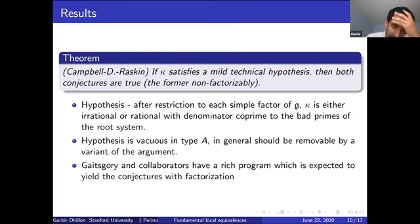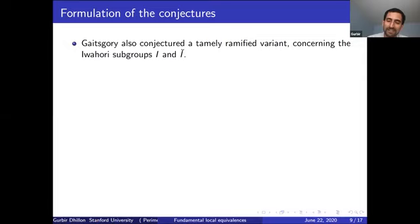What Gaitsgory does instead is he relates both sides to representations of quantum groups. He writes both sides as categories in a way that's compatible with factorization.